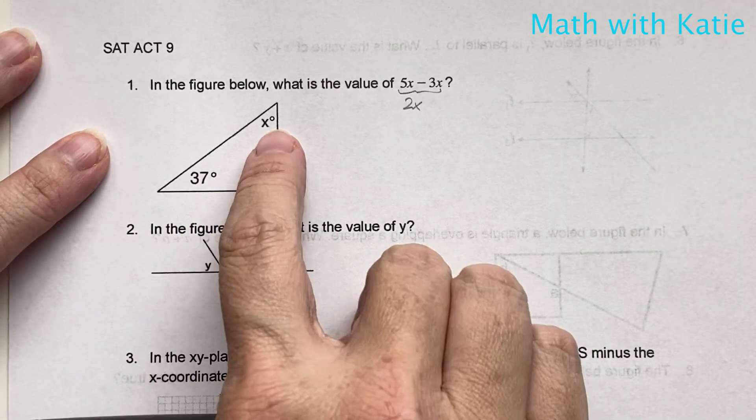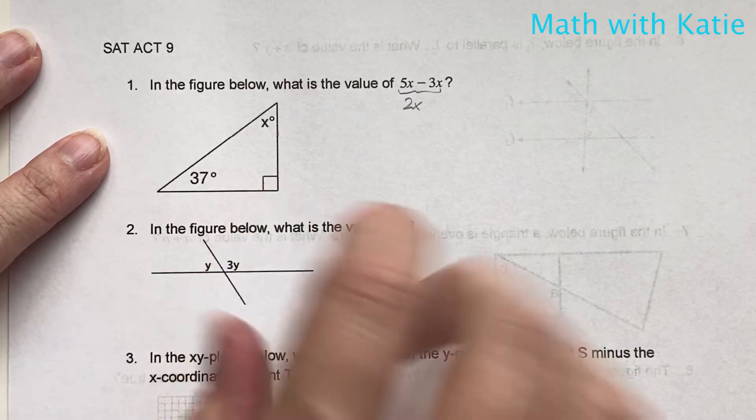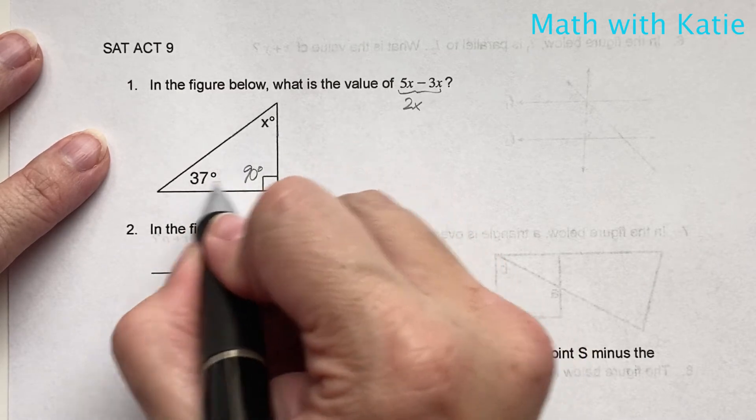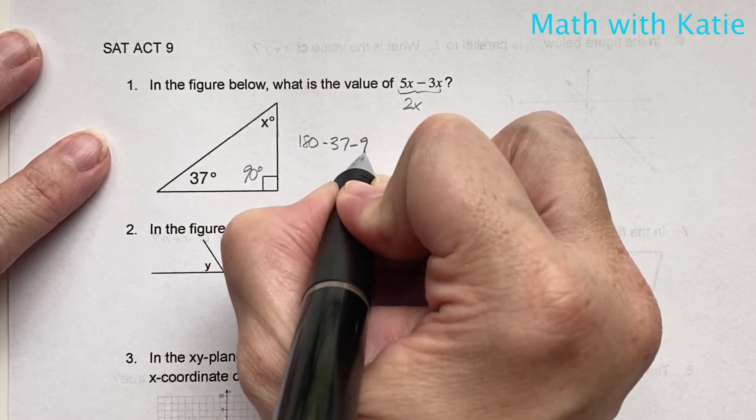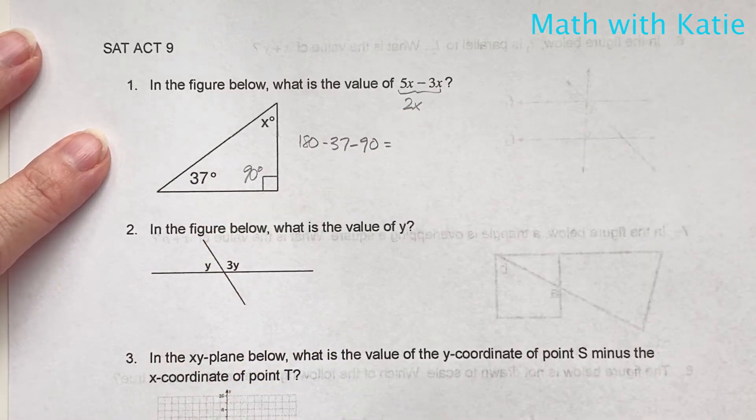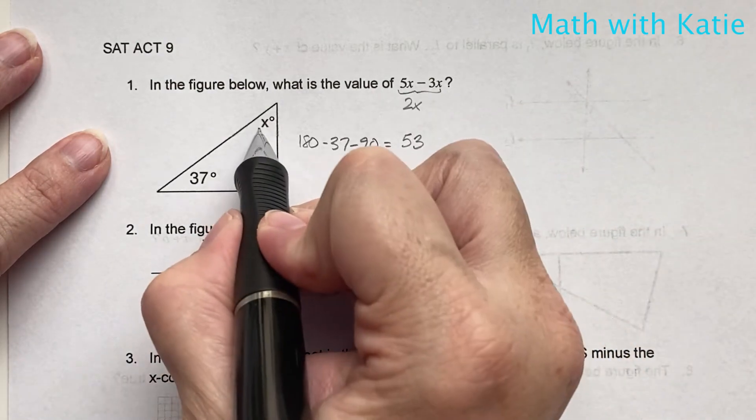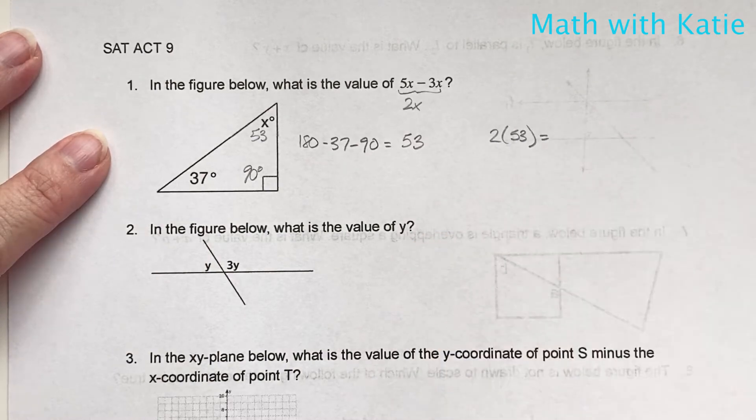Alright, so now let's look and see how we can find the value of x here. We notice that this is a right angle, so this is 90 degrees. We also know that the total degree measure of a triangle is 180, so if we do 180 minus 37 minus 90, that'll give us 53. So x equals 53. Now, if we take 2 times 53, that'll give us 106.